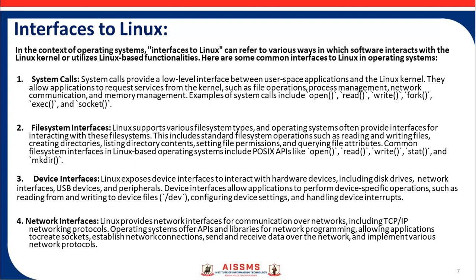Examples of system calls include: open, read, write, fork, exec, and socket functions. Next is the file system interface. Linux supports various file system types, and the operating system provides interfaces for interacting with each file system. This includes standard file system operations such as reading and writing files, listing directory contents, setting file permissions, and querying file attributes. Common file system interface functions include open, read, write, stat, and mkdir — that is, make directory.